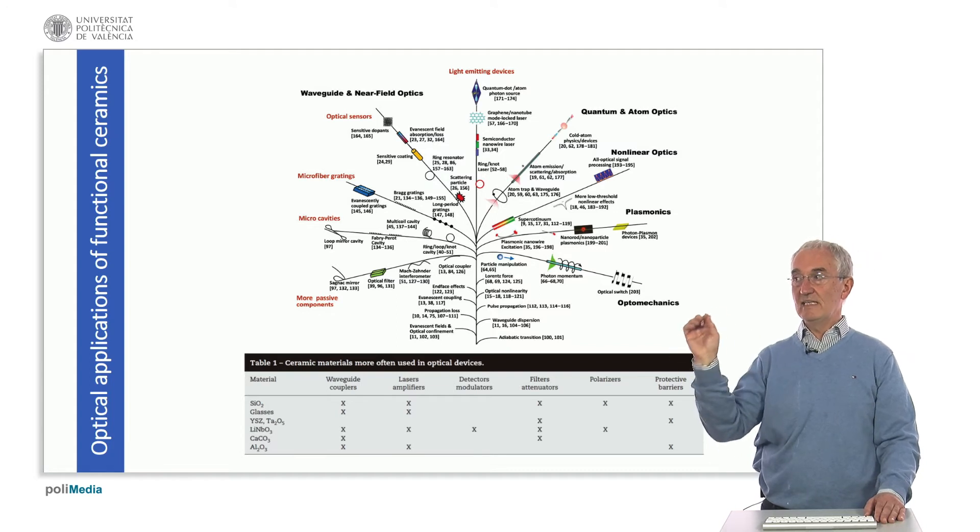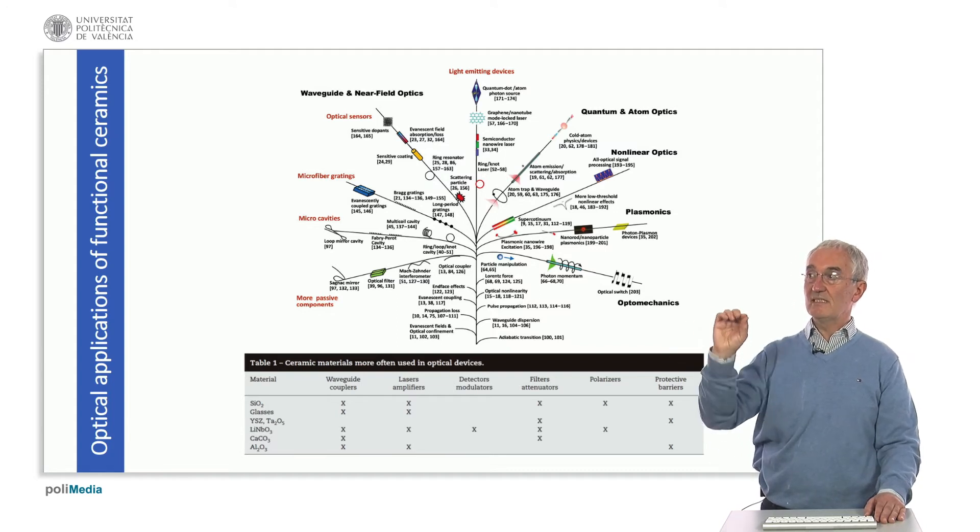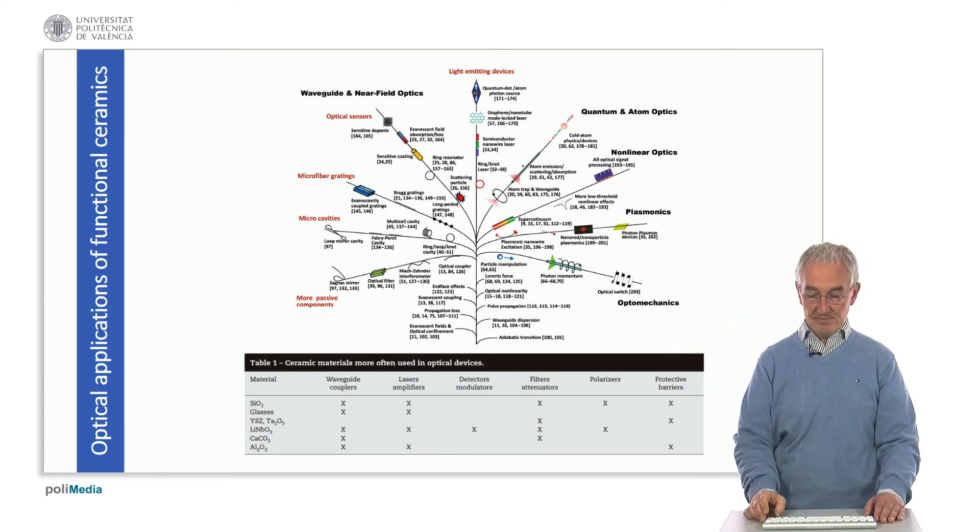And by combining all these individual properties and the combination of these microstructures, we can produce quantum and atom optics, nonlinear optics, and then photonic circuits by the right combination, normally on a very thin substrate.